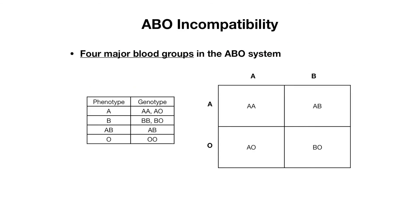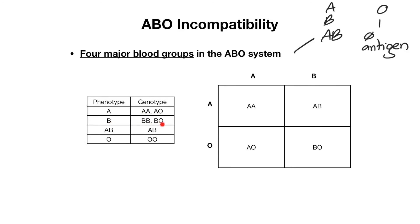Now let's talk about ABO incompatibility. There are four major blood groups: A, B, AB, and O. O means that there are no A or B antigens on the surface of the red blood cells. With an A phenotype, the genotype can be AA or AO. With a B phenotype, the genotype is BB or BO. With an AB phenotype, there is only one genotype: AB. And with an O phenotype, there is only one genotype: OO.